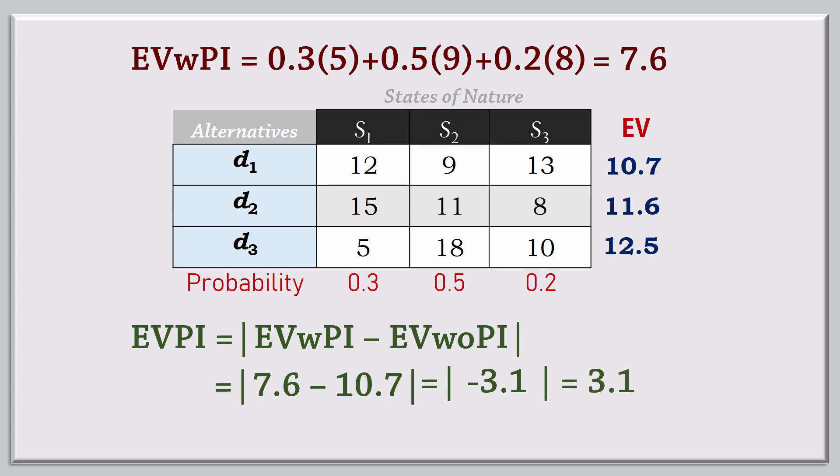Note that in profit problems, EV with PI is generally higher than EV without PI, so the absolute value may not be required. But it is important in cost problems, because EV with PI is usually less or equal to EV without PI.